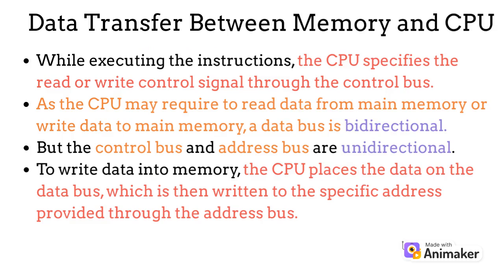While executing the instructions, the CPU specifies the read or write control signal through the control bus. It is important to note that the data bus is bi-directional, as the CPU may require to read data from main memory or write data to main memory. However, the control bus and address bus are unidirectional. To write data into memory, the CPU places the data on the data bus, which is then written to the specific address provided through the address bus.